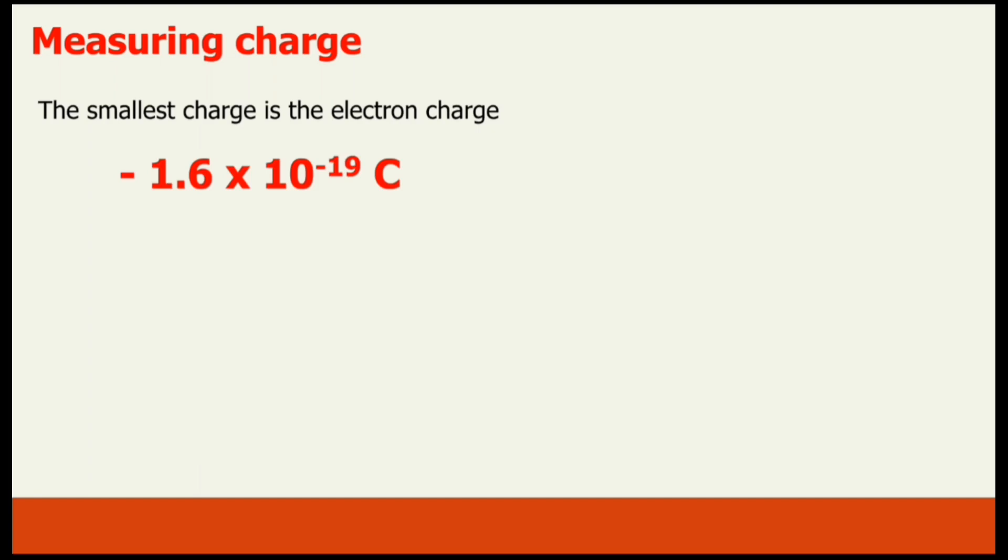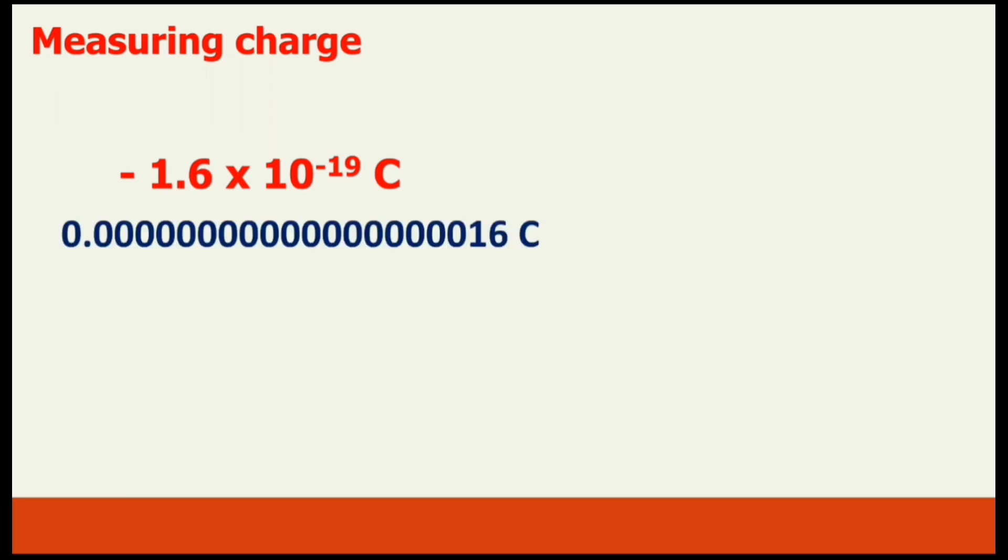What is charge measured in? Well, charge is measured in coulombs. We use the big symbol C for coulombs. The smallest charge to date is the electron charge, with a charge of negative 1.6 times 10 to the power minus 19 coulombs. That is a very small number, a very tiny charge.